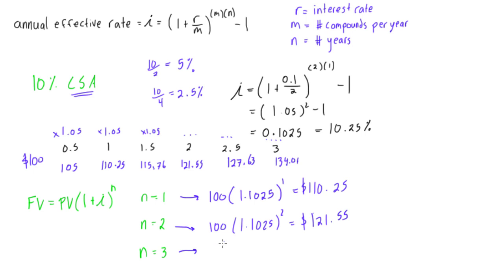And lastly, if we have n is equal to 3, we have 100 times 1.1025 to the power of 3 for 3 years. And we're going to get a value of, it'll be exactly the same. If you cube this and then multiply it by 100, you will get $134.01.